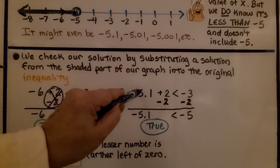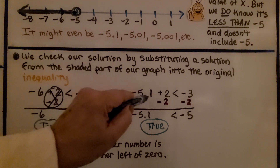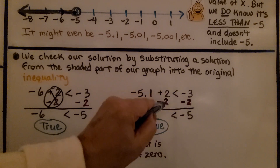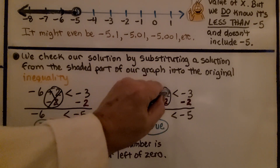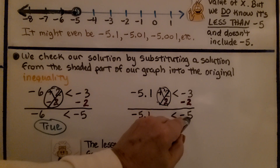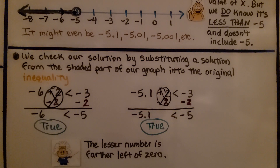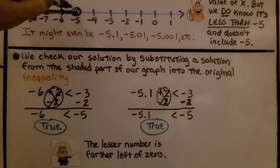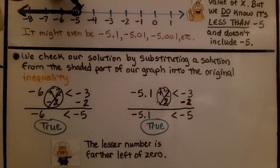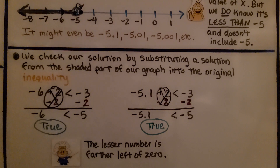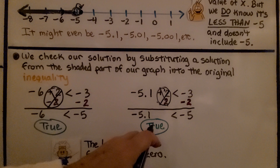We could also try negative 5 and one-tenth in place of x. Subtracting 2 from each side eliminates the plus 2 and gives us negative 5 and one-tenth is less than negative 5. That's true — negative 5 and one-tenth is just to the left of negative 5 on the number line. If it were on the other side, it would be in the negative 4s, like negative 4 and nine-tenths. So negative 5 and one-tenth is indeed less than negative 5.